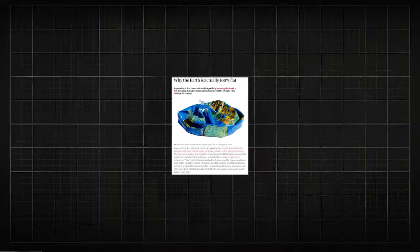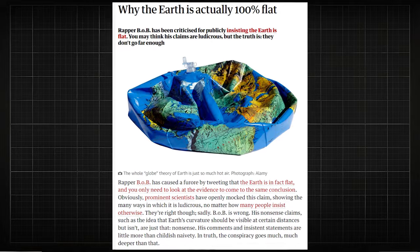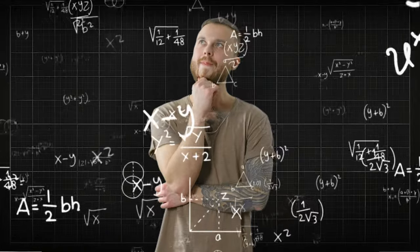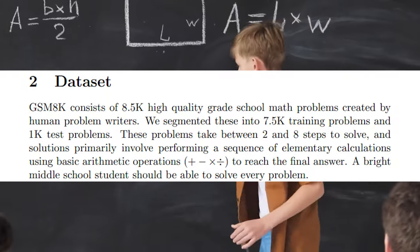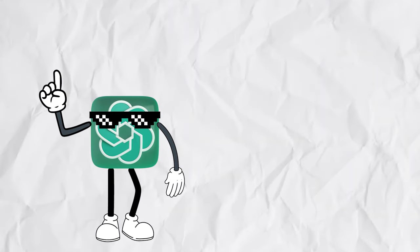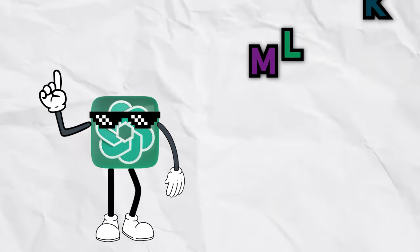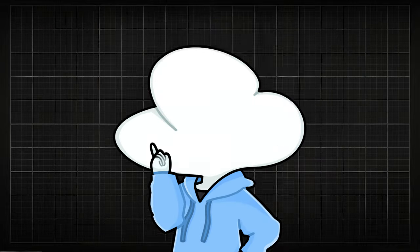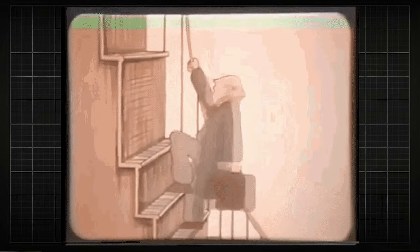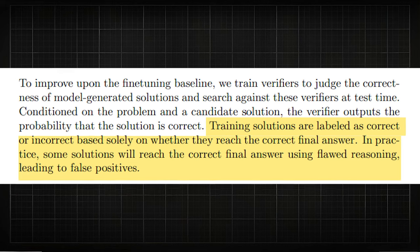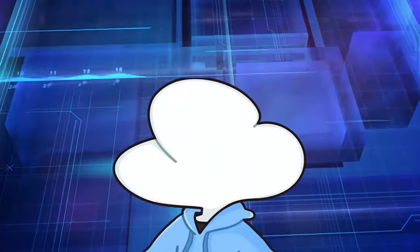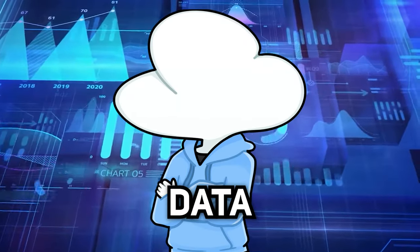Grade School Math 8K (GSM8K) is a dataset of 8.5K basic math problems that require multi-step reasoning, with each problem taking around 2 to 8 steps to solve. Instead of doing math numerically, the AI has to answer questions completely in natural language, which is pretty good since it tests the model's logic and mathematical capabilities at the same time. However, there is a potential issue where the reasoning steps are incorrect but the model still generates the right final answer, which might mean the model memorized the answer — though the chance is pretty low if the data is not in the original training data.